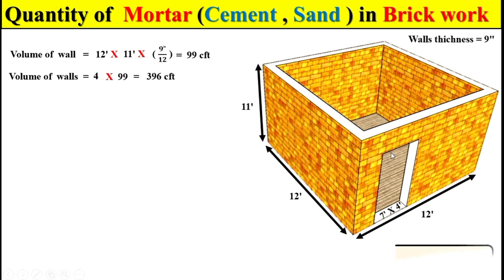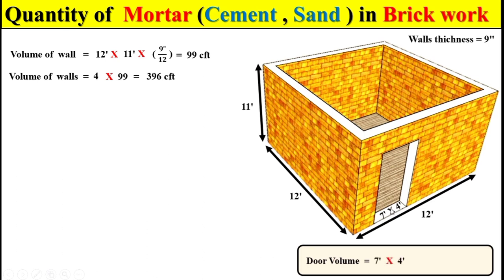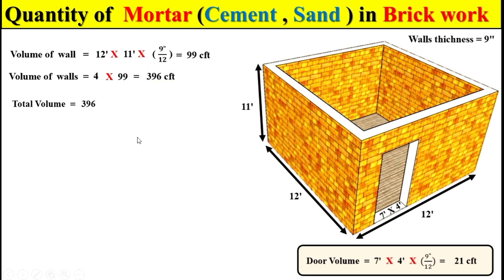To calculate the total volume of the door, we multiply 7 times 4 to get the total surface area of the door, and then we multiply this surface area by the wall thickness of 9 inches to get the total volume of the door. To calculate the total net volume of brickwork, we take the total brickwork volume of 399.6 cubic feet and subtract the volume of the door, giving us the total net volume of brickwork.